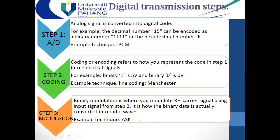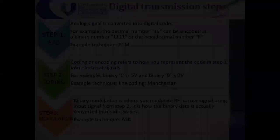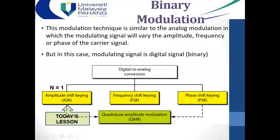The modulator output will be ASK, FSK, or PSK. There are basically three different types of binary modulation: amplitude shift keying, frequency shift keying, and phase shift keying. There is also one more type — a mix of amplitude shift keying and phase shift keying — called quadrature amplitude modulation (QAM). Today our focus is ASK.